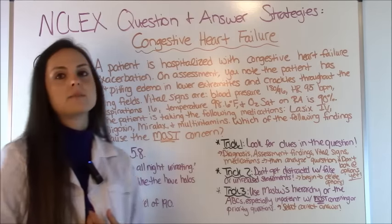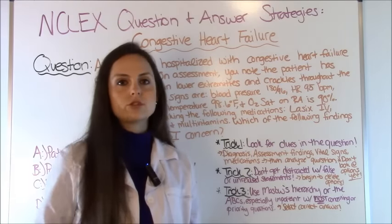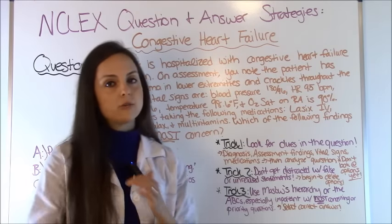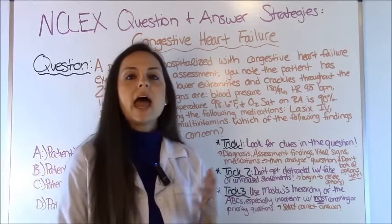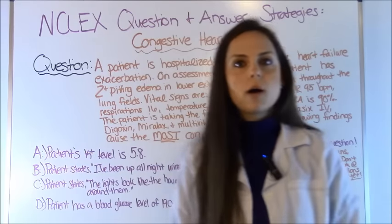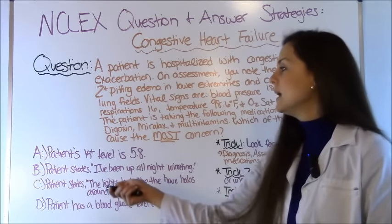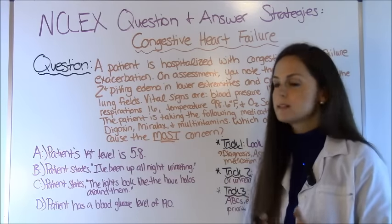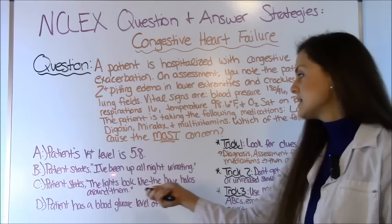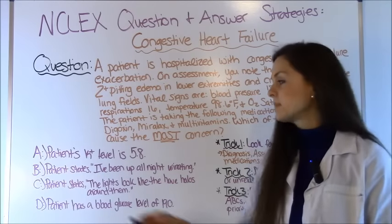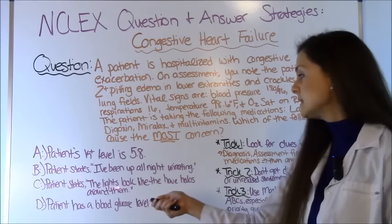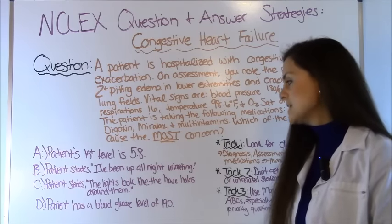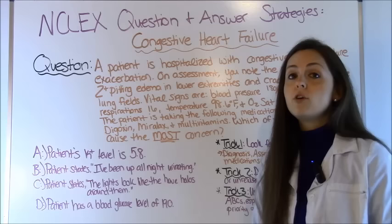Now let's look at the options. A: patient's potassium level is 5.8. B: patient states, 'I've been up all night urinating.' C: patient states, 'the lights look like they have halos around them.' Or D: patient has a blood glucose level of 190.